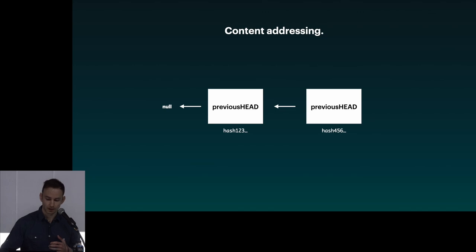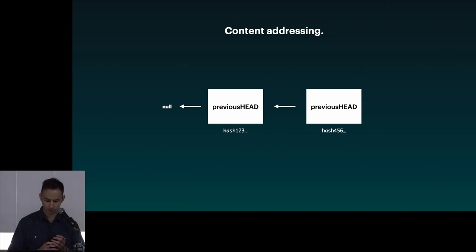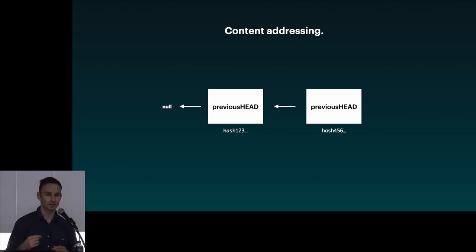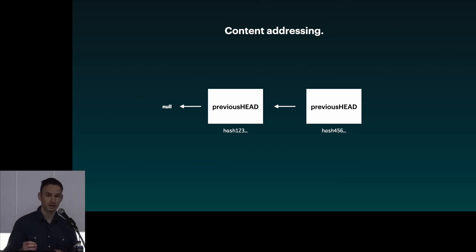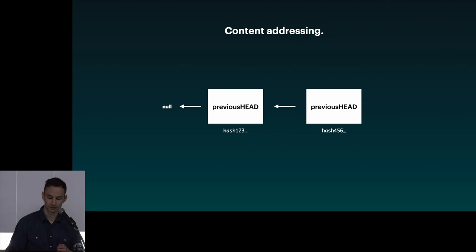Now let's talk about what's actually in these events. We have something called the 'previous head' — a pointer to the previous message. This is how we create the chain of events. It works exactly like Git: every single Git commit references the previous one, and the first event is the one that references nothing — null.